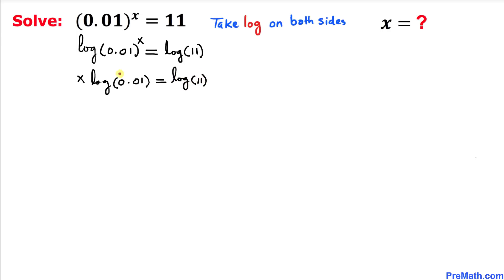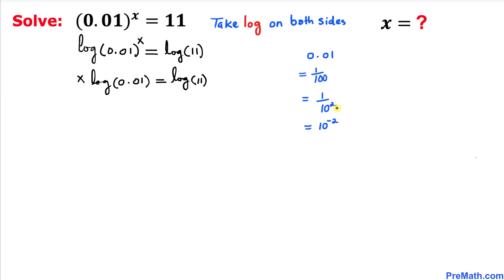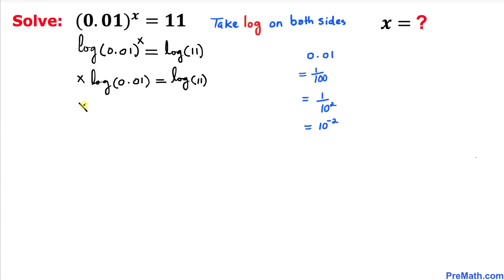Now let's focus on the value 0.01 in the argument. We can write this decimal notation as the fraction 1 over 100. This 100 can be written as 10 to the power 2, and moving it to the top makes it 10 to the power negative 2. So we can replace 0.01 with simply 10 to the power negative 2.